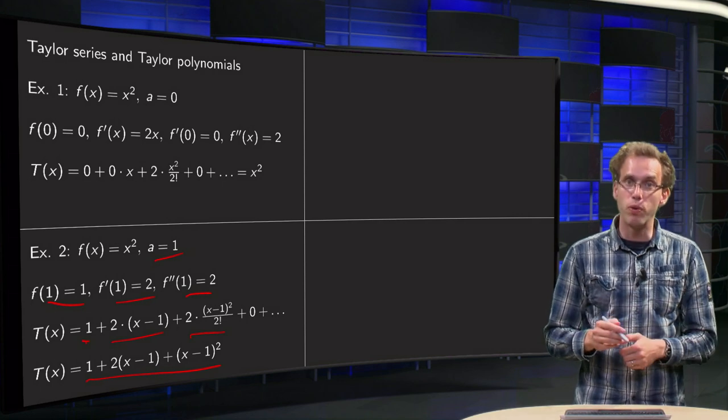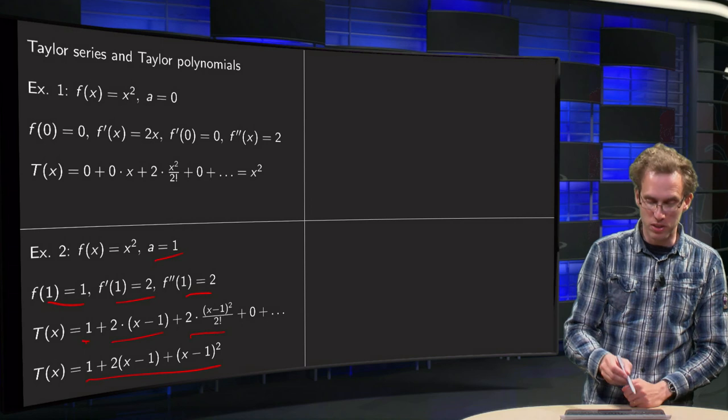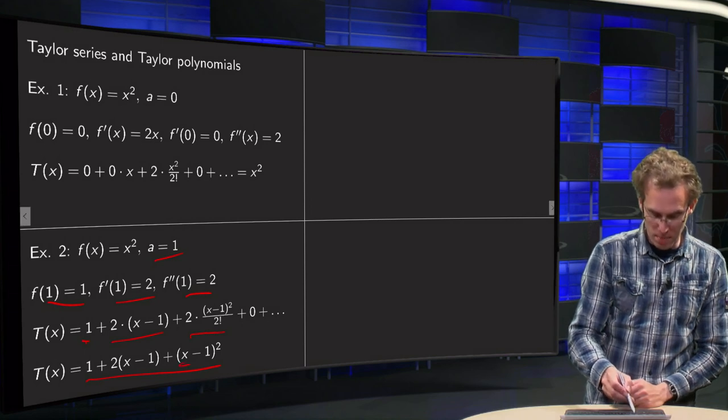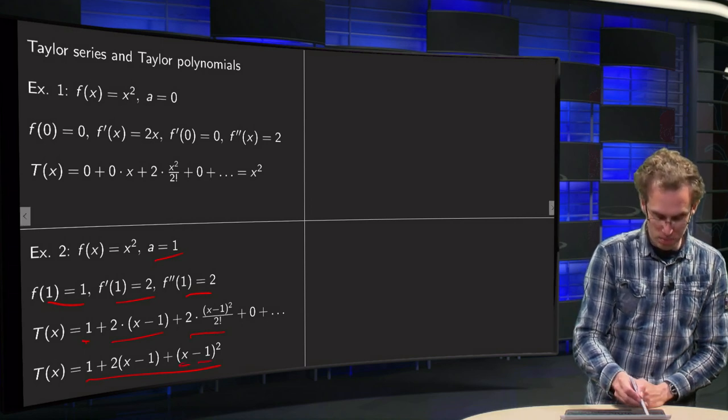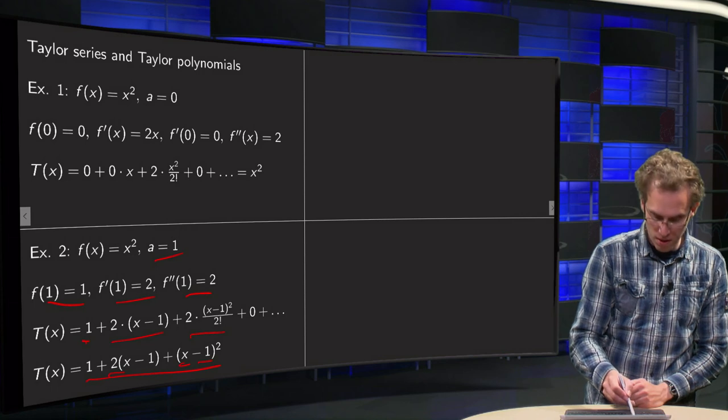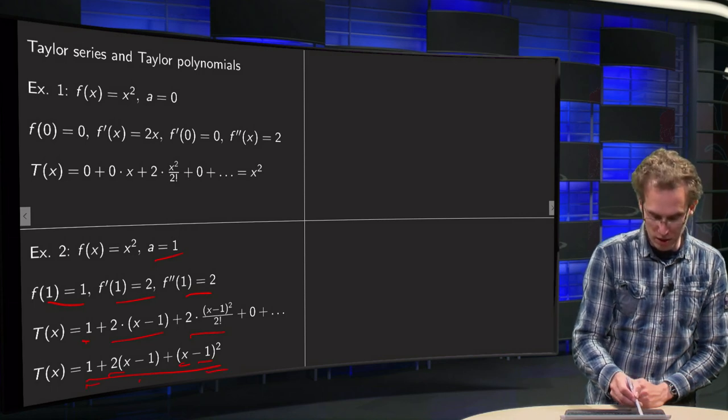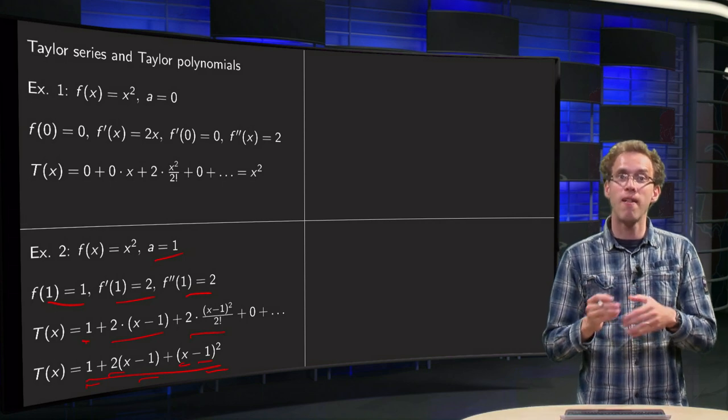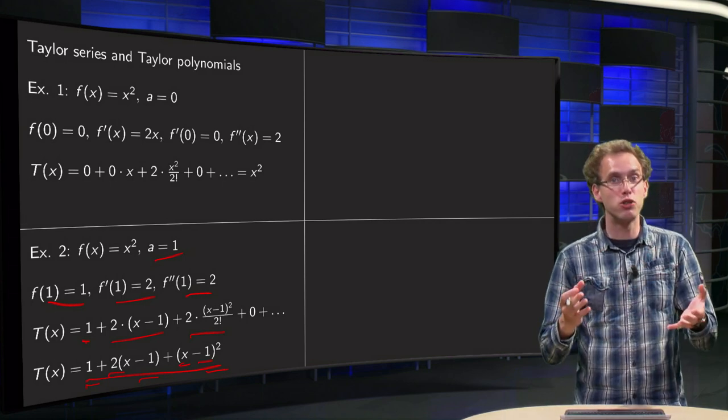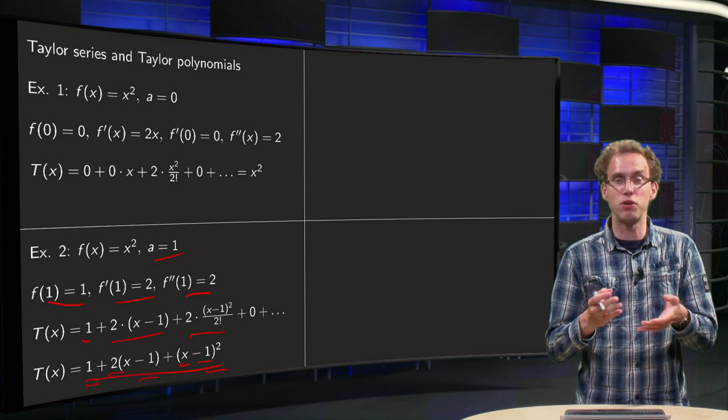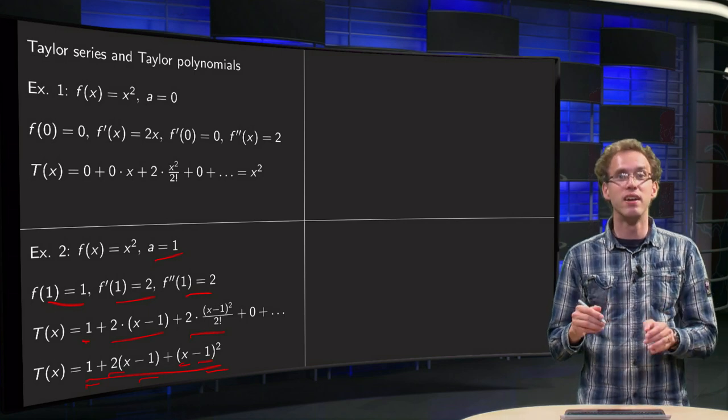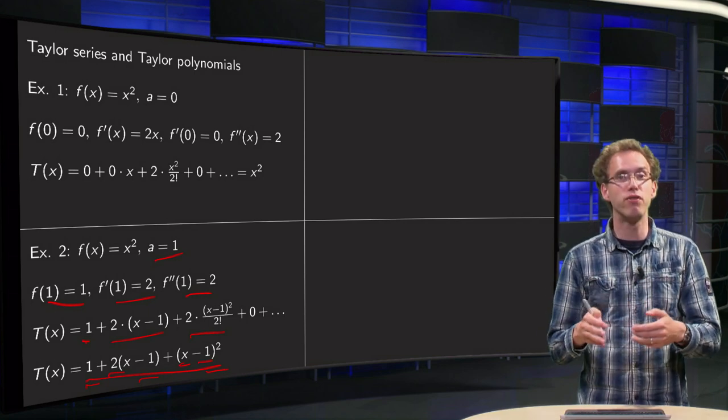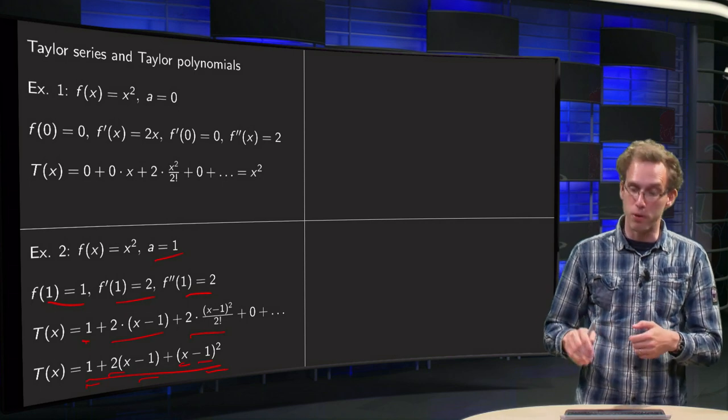Because if you would work out the brackets, here you get x² - 2x + 2x, so it does cancel out, plus 1 + 2 - 2 over here, so you get again x² back. So if you try to compute the Taylor series of some polynomial, it's totally fine, you can do that, you can use the general formula, and you will get a polynomial back.